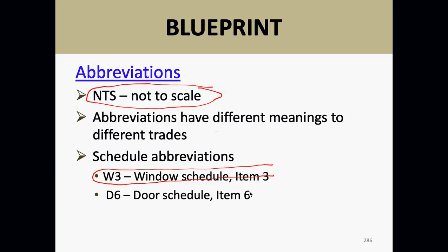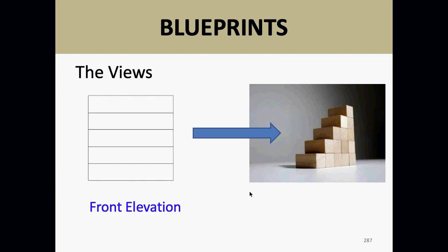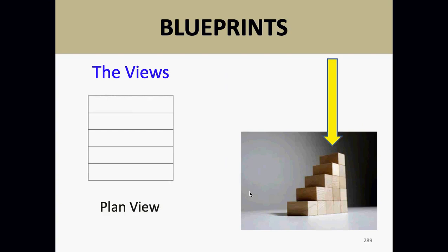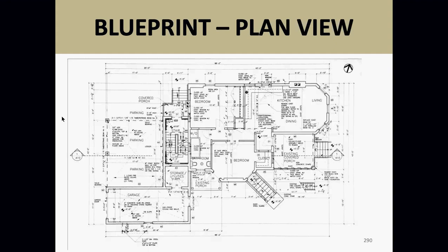A front elevation shows the outline of the building as you look at the front. A side elevation shows the view from the side. The top — the plan view — is what you're drawing out now: the top-down view of the building. This was covered earlier in the course; this is just a review.